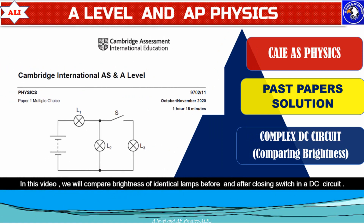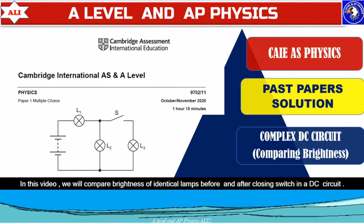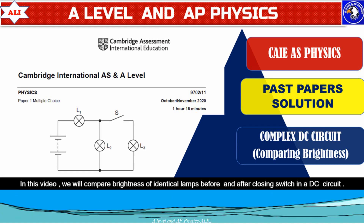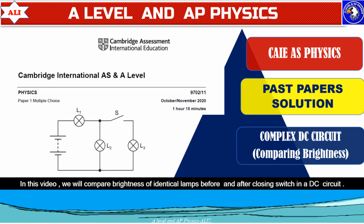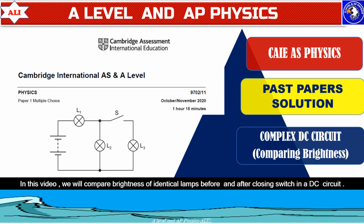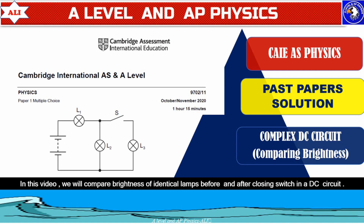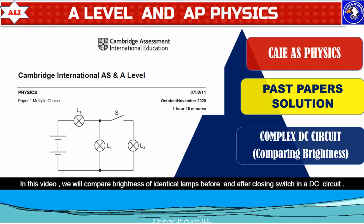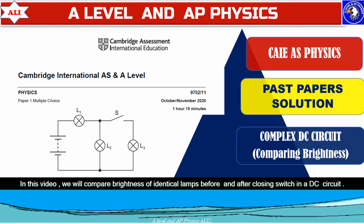Welcome to A-Level and AP Physics, a place where you can improve your understanding of physics with confidence. In today's class, we will talk about one complex DC circuit. In this circuit, we will compare brightness of identical lamps before and after closing the switch. This is a typical and very important question to understand complex DC circuits.